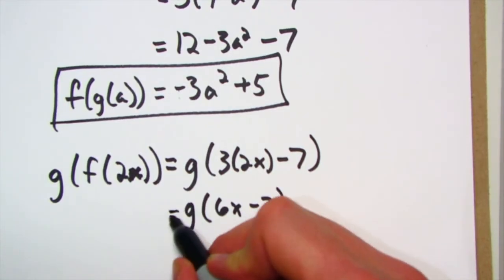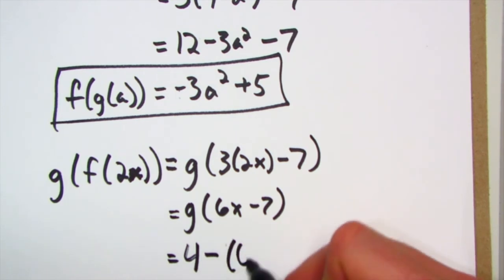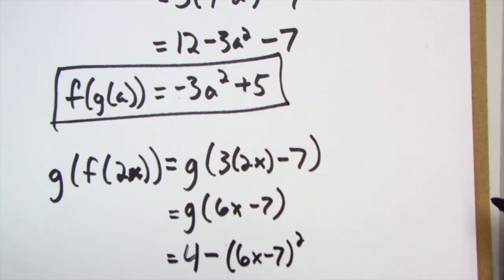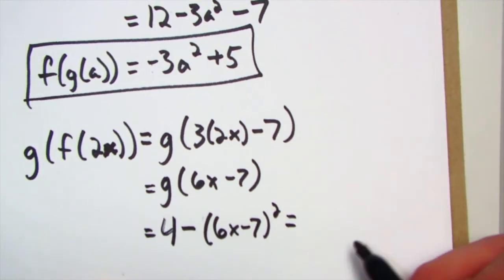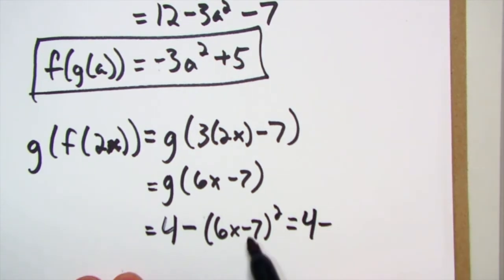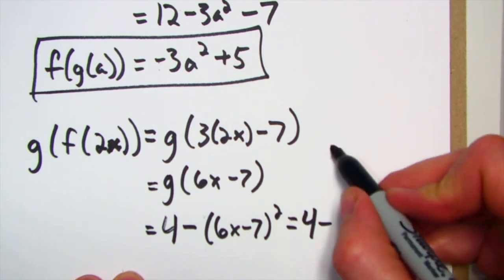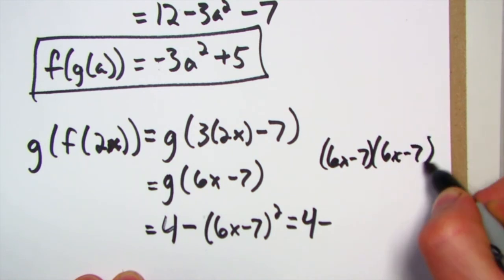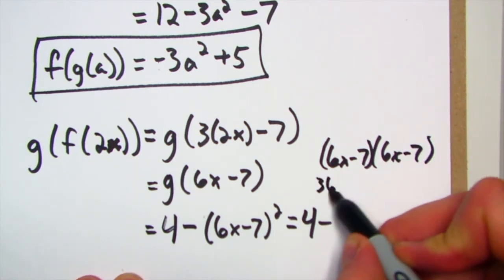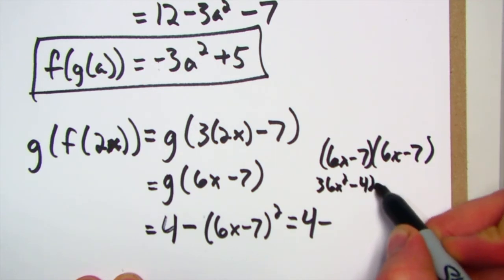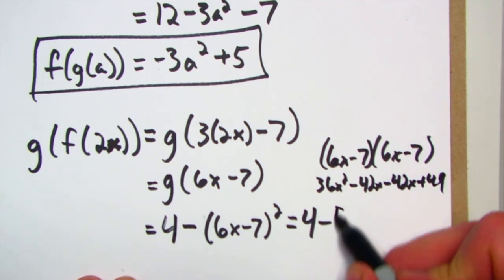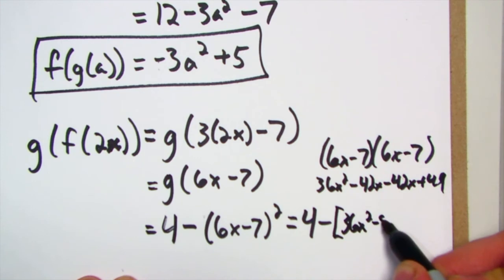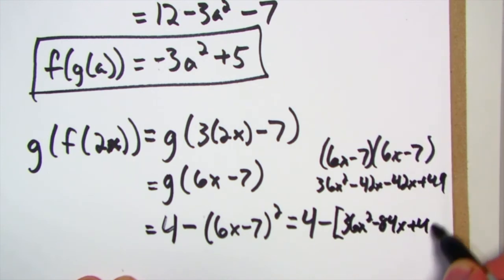So this is going to be 4 minus 6x minus 7 squared. All right, this one's going to take a little work. I might run out of room here. I'm going to go sideways for just a second. So 4 minus... all right, when I take this times itself, 6x minus 7 times 6x minus 7, I get 36x squared minus 42x minus another 42x and plus 49.